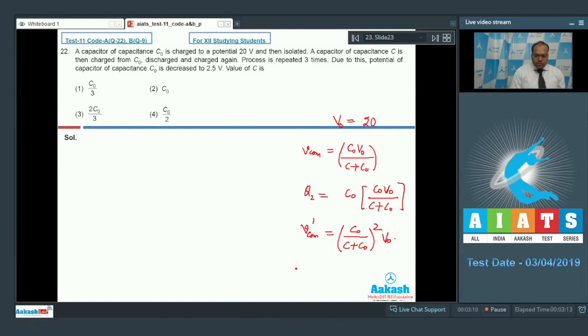now it comes to be C0 upon C plus C0 whole square into V0. Similarly, in the third process, the common potential comes out to be C0 divided by C plus C0 cube into V0.